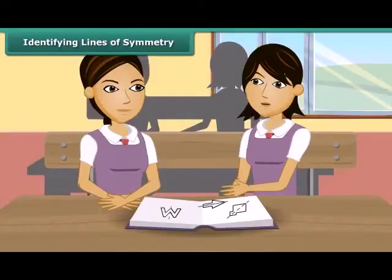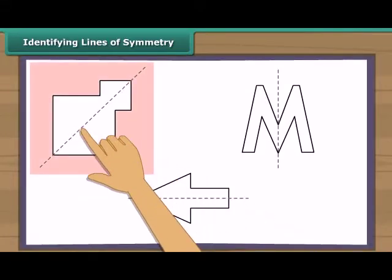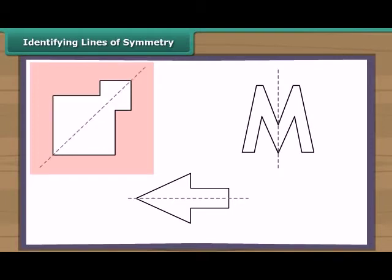Priya, can you now identify the line of symmetry in these designs? I will try. In this figure, this is the line of symmetry, or axis of symmetry. When we fold this design this way, the two parts so formed will coincide. So this is the line of symmetry.